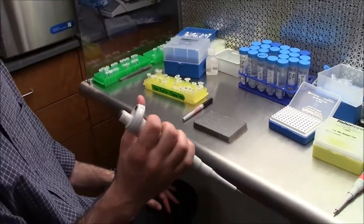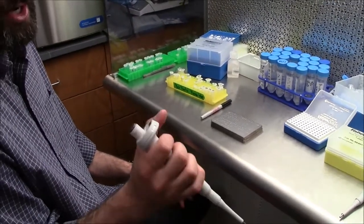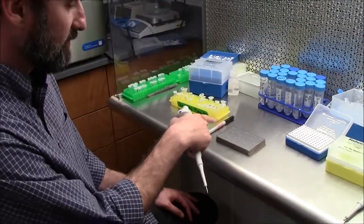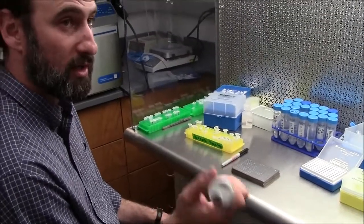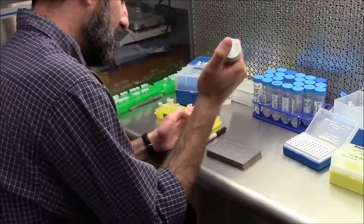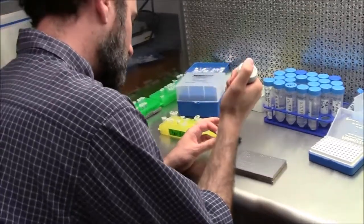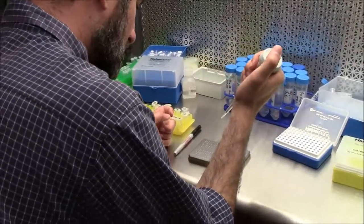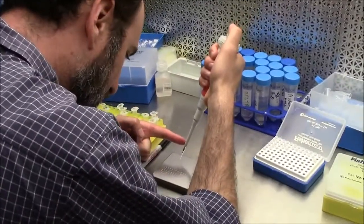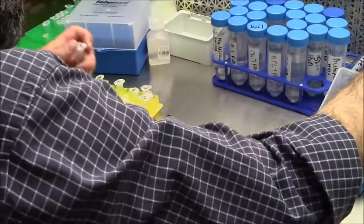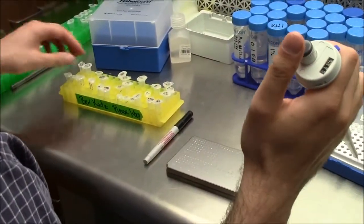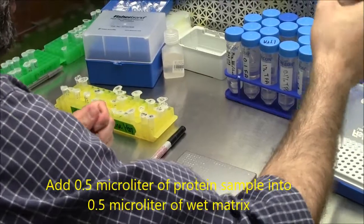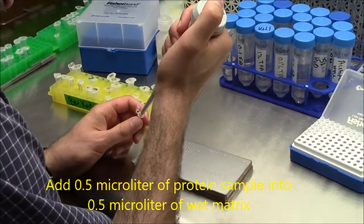I like to spot half a microliter spots because they dry faster. The plates, these plates are coated so they can hold a microliter if you wanted to. So the most important thing is half a microliter of matrix. It's just got to be one to one. And then a half a microliter of your sample into the wet matrix. The order is important.